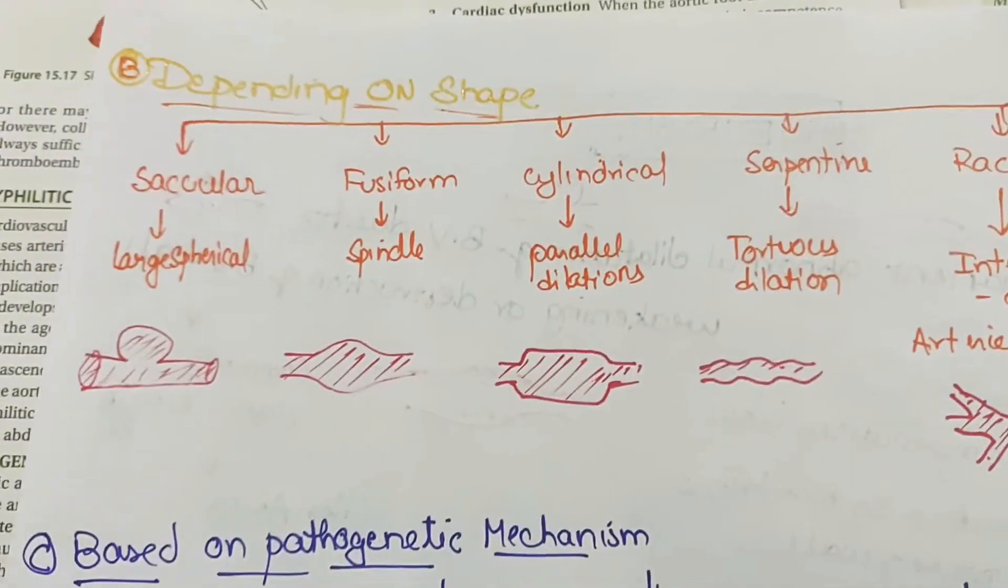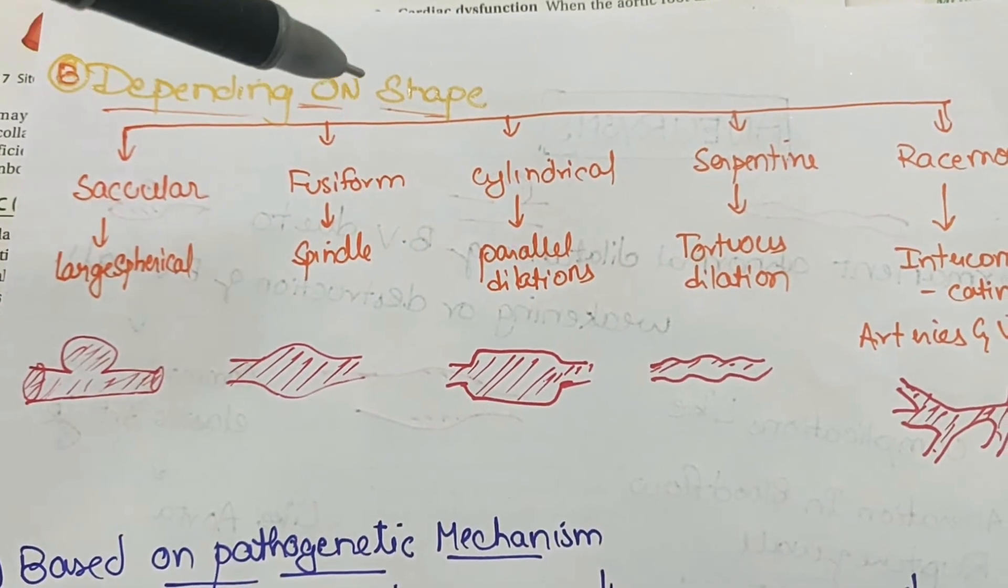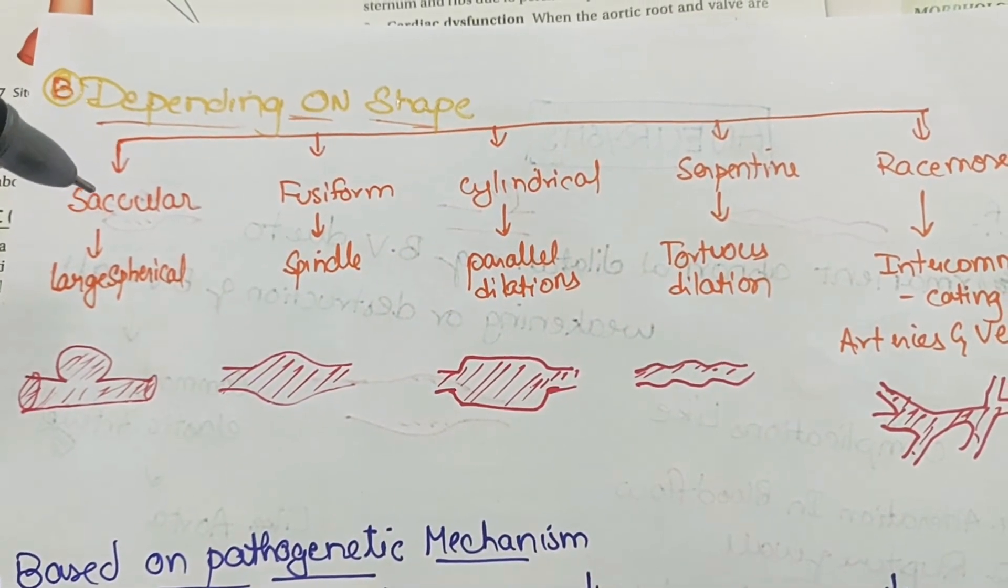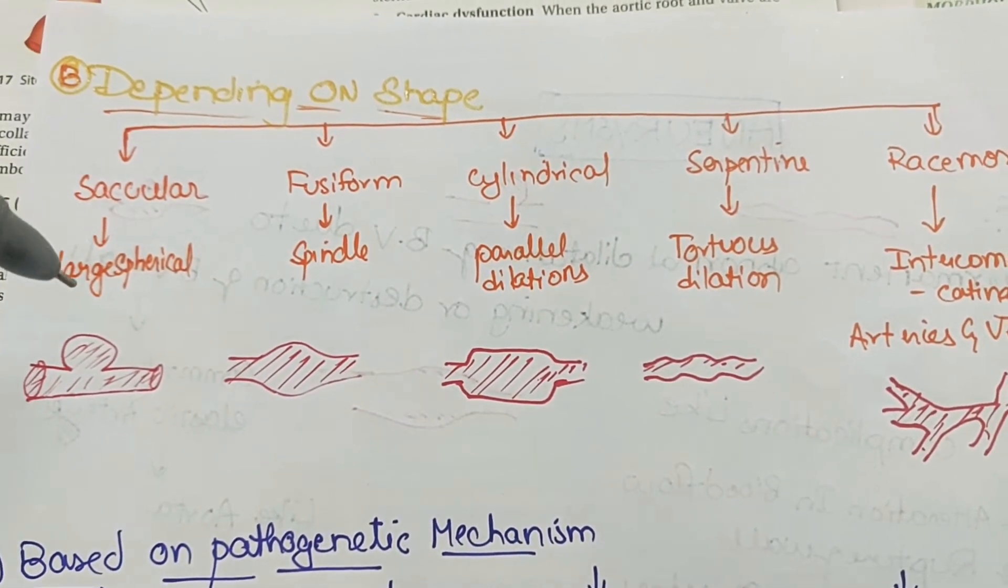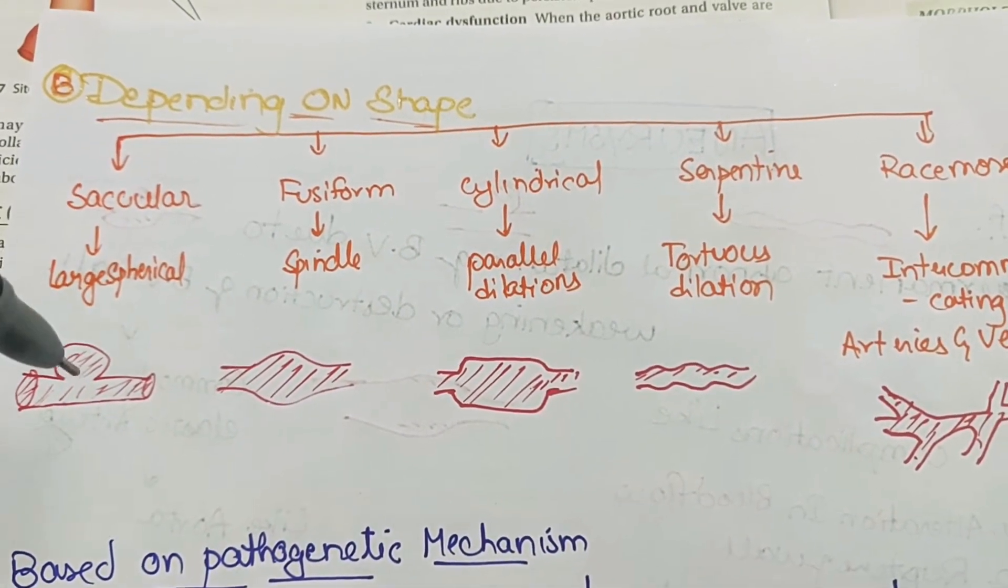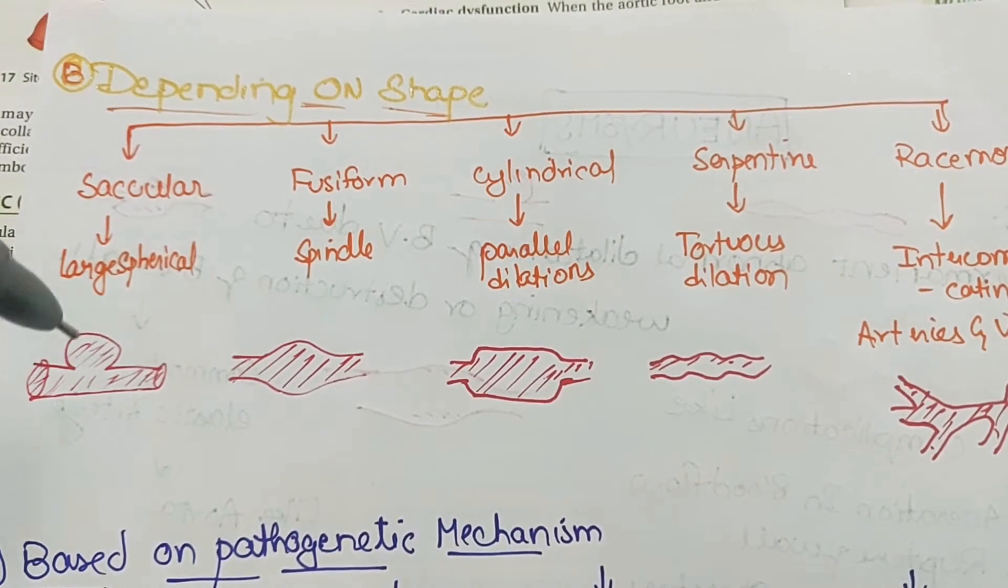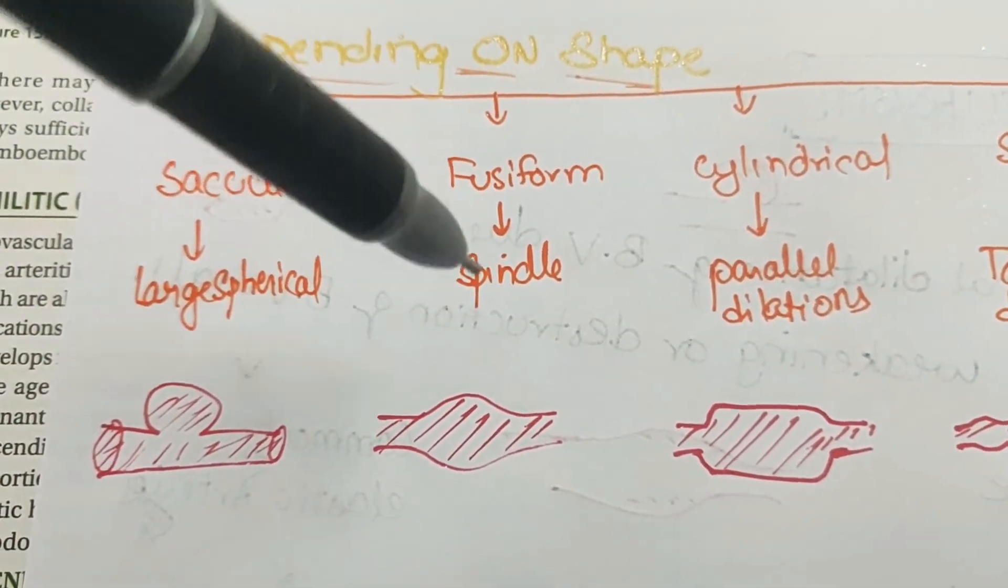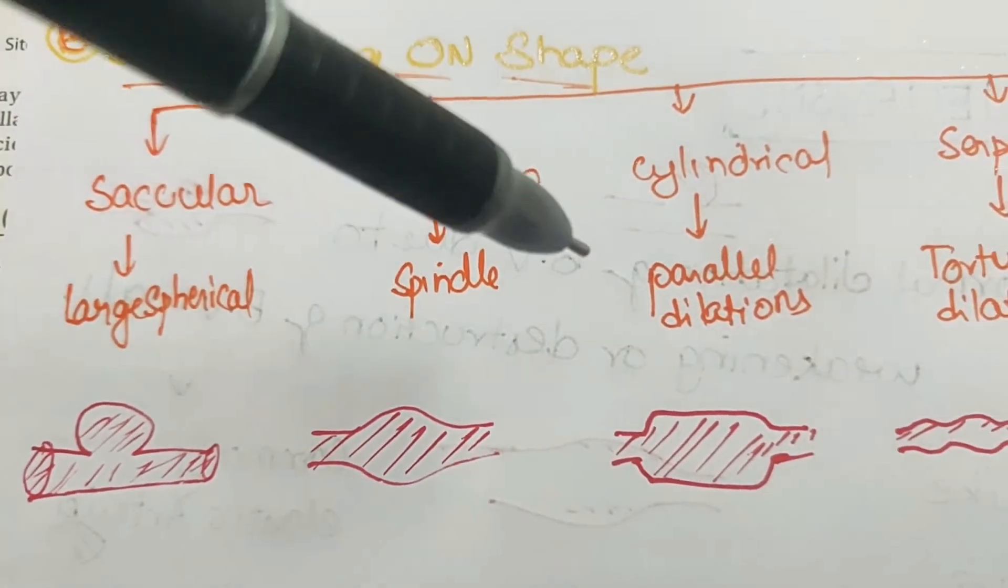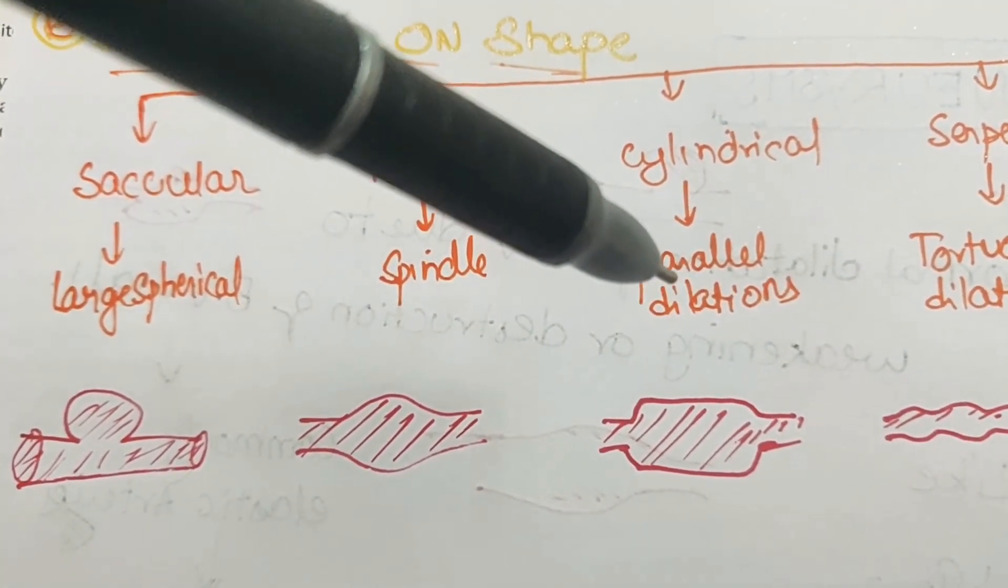Depending on the shape, we have saccular which means there is a large spherical dilation of the wall of the blood vessel. Next, we have fusiform which is spindle in shape, and cylindrical which has parallel dilations.